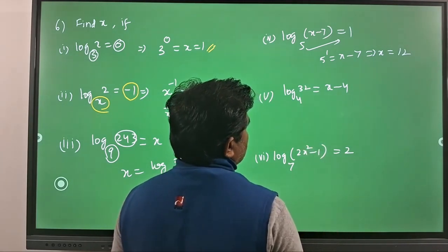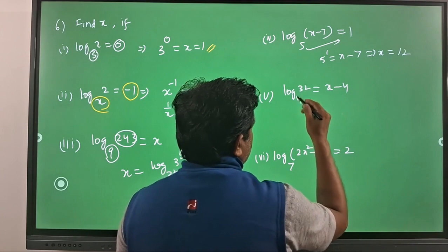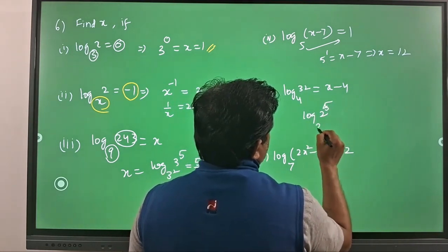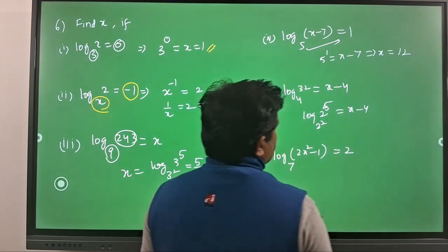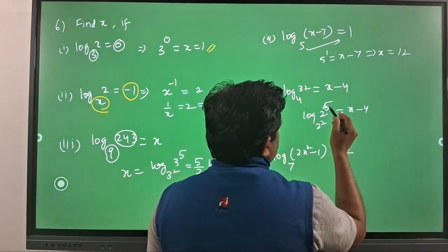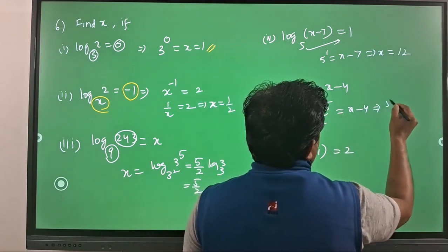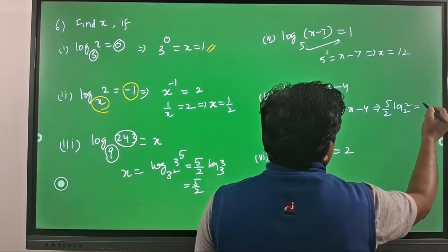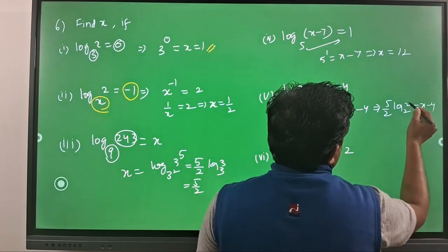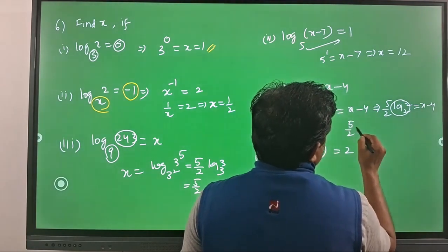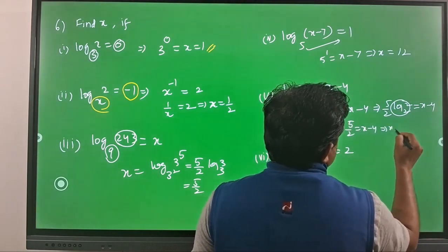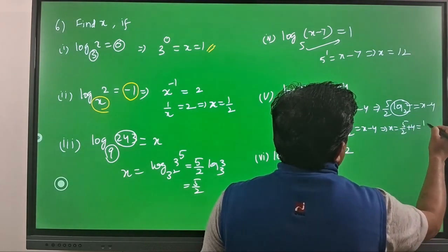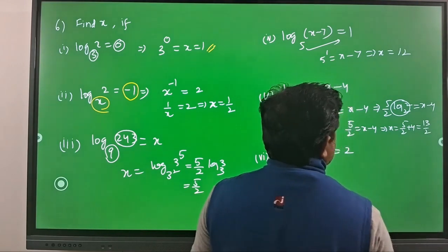For the next one, 32 cannot be written directly as a power of 4, so we write it as a power of 2. You will have log of 2 power 5 to the base 2 power 2 equal to x minus 4. The powers become coefficients, giving 5 by 2 times log base 2 of 2, which equals 1. So 5 by 2 equals x minus 4, which implies x equals 5 by 2 plus 4, that is 13 by 2.